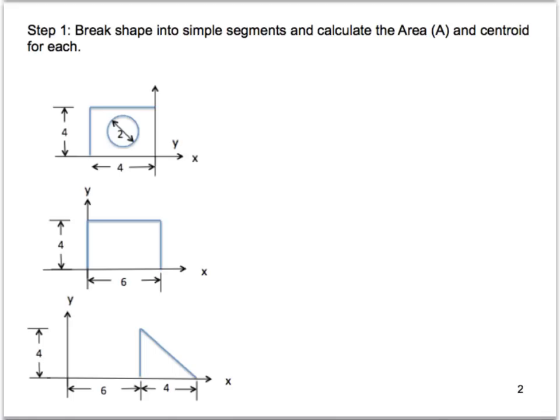Step 1 will be to break the shape into simple segments to calculate the area, the X and Y centroid for each. So I've taken the square on the left of the Y axis, the rectangle on the right, and the triangle on the right.